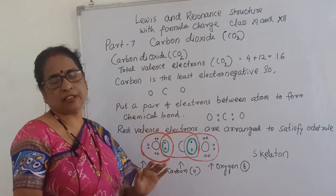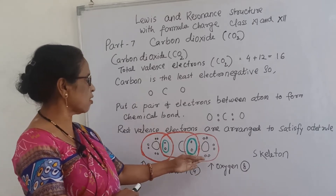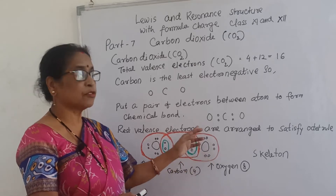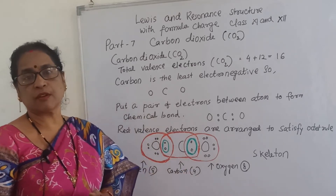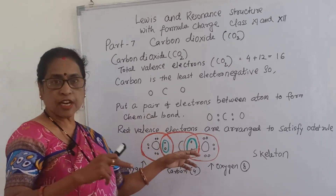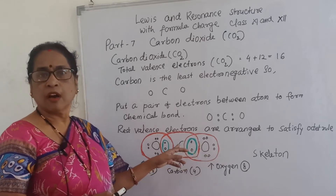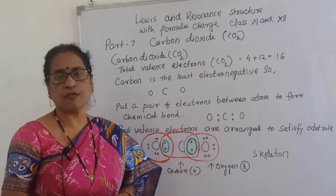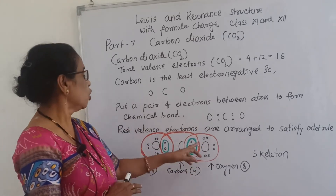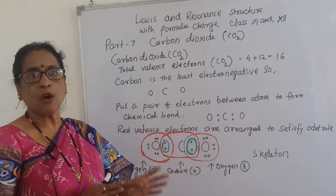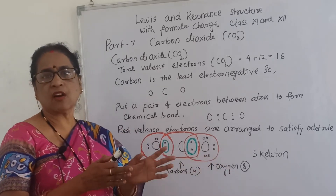Looking at carbon and this oxygen - whether they are satisfying the octet rule. For this oxygen, there are six non-bonding electrons because they are not used in the formation of bond. Between carbon and this oxygen: one pair of bonding electrons and three pairs of non-bonding electrons. Total when you see the oxygen is satisfied by eight electrons - four pairs total, one pair bonding and three pairs non-bonding, giving eight electrons. This oxygen satisfies the octet rule.